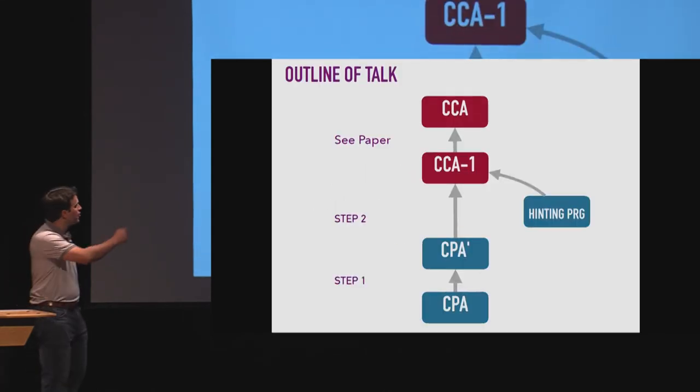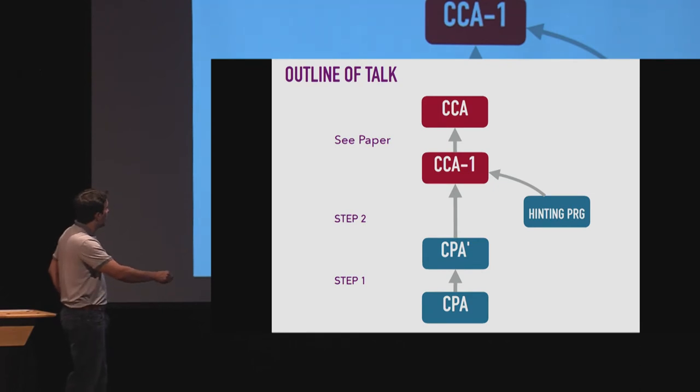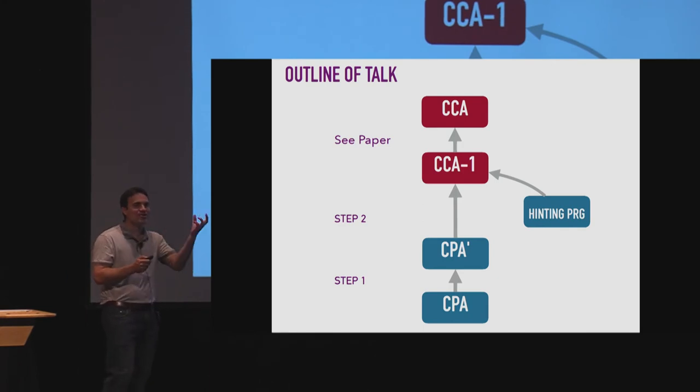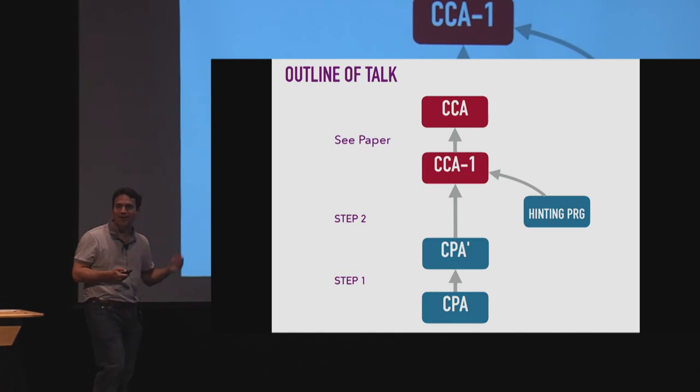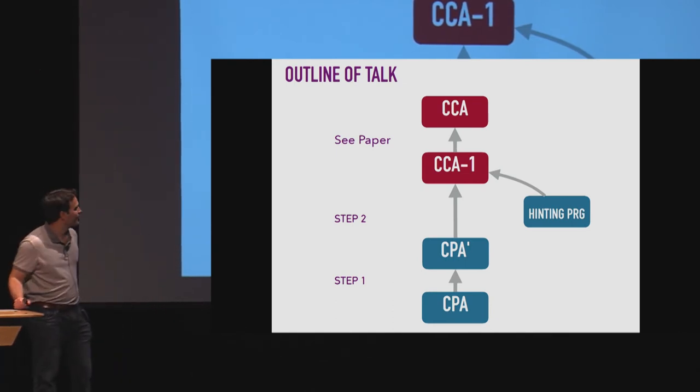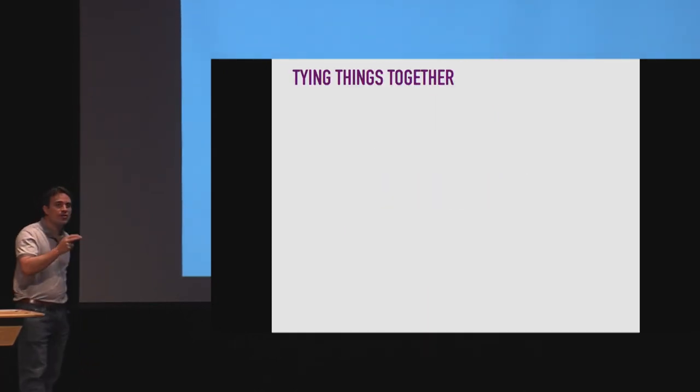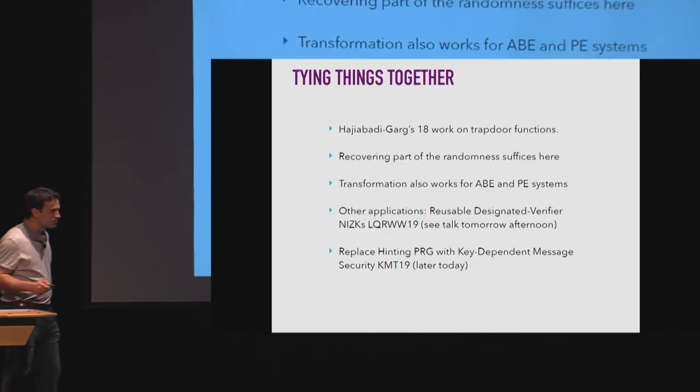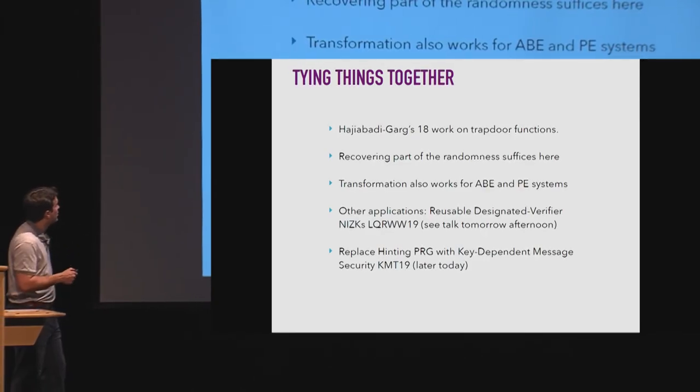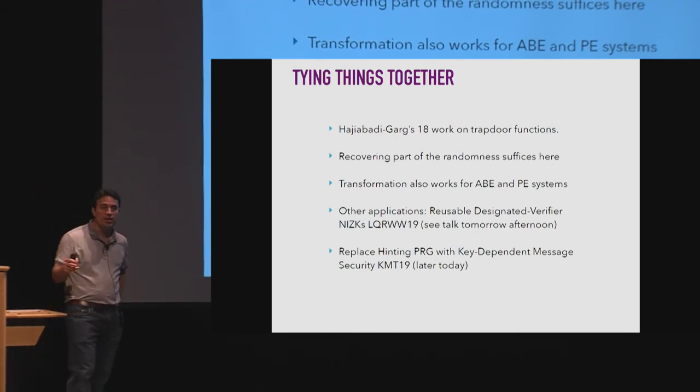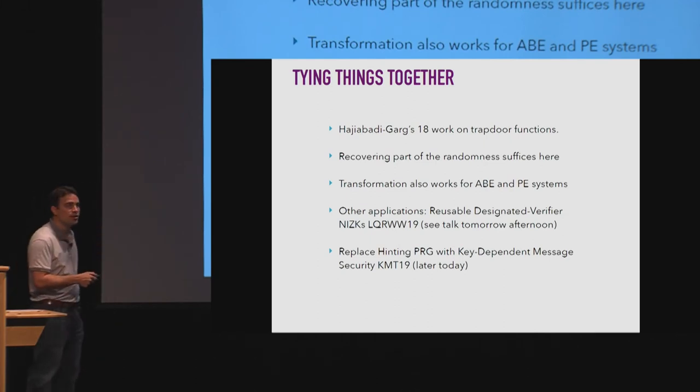Okay. So this is an overview of what we did. We had a process, a new generic way of going from CPA to CCA security. And the only thing not implied just by public key encryption was this additional hinting PRG. And of course, it's pretty tantalizing to think, you know, could you just somehow get that from public key encryption or pseudorandom generators or something like that. I don't, it's still kind of tough. And I like to wrap up by just tying things together. Some other works here. I mentioned earlier, there's this work of Haji Badi and Garg on trapdoor functions. There was also followup work to theirs that was concurrent to ours that improve these trapdoor functions in a way I think it appeared recently.